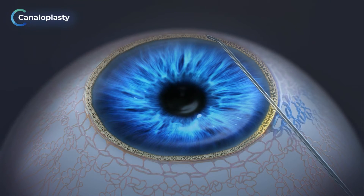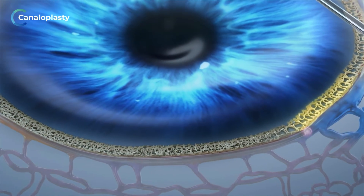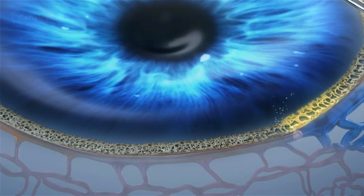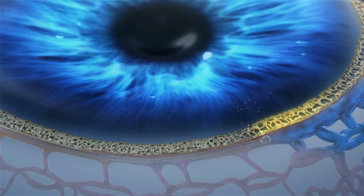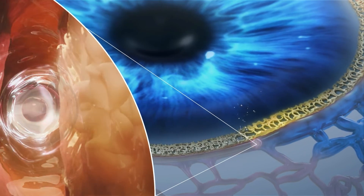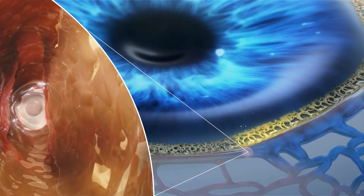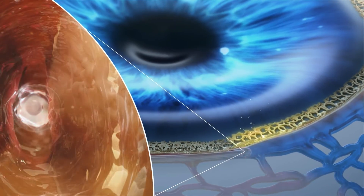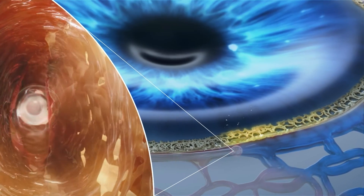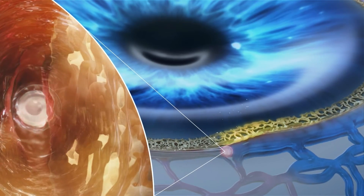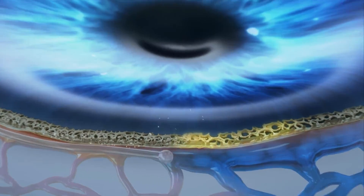Canaloplasty is a simple, non-implant procedure that treats glaucoma by clearing blockages and widening eye drainage pathways without removing or tearing eye tissue. During the procedure, tiny micro-perforations, or openings, are created in the trabecular meshwork, leading to improved drainage of fluid. Canaloplasty can also increase the diameter of Schlemm's canal by up to three times and clear blockages in the collector channels.